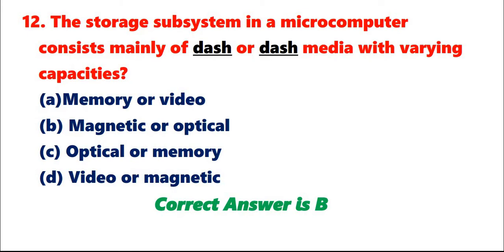Question 12: The storage subsystem in a microcomputer consists mainly of media with varying capacities. A. Memory or video. B. Magnetic or optical. C. Optical or memory. D. Video or magnetic. Correct answer is B.